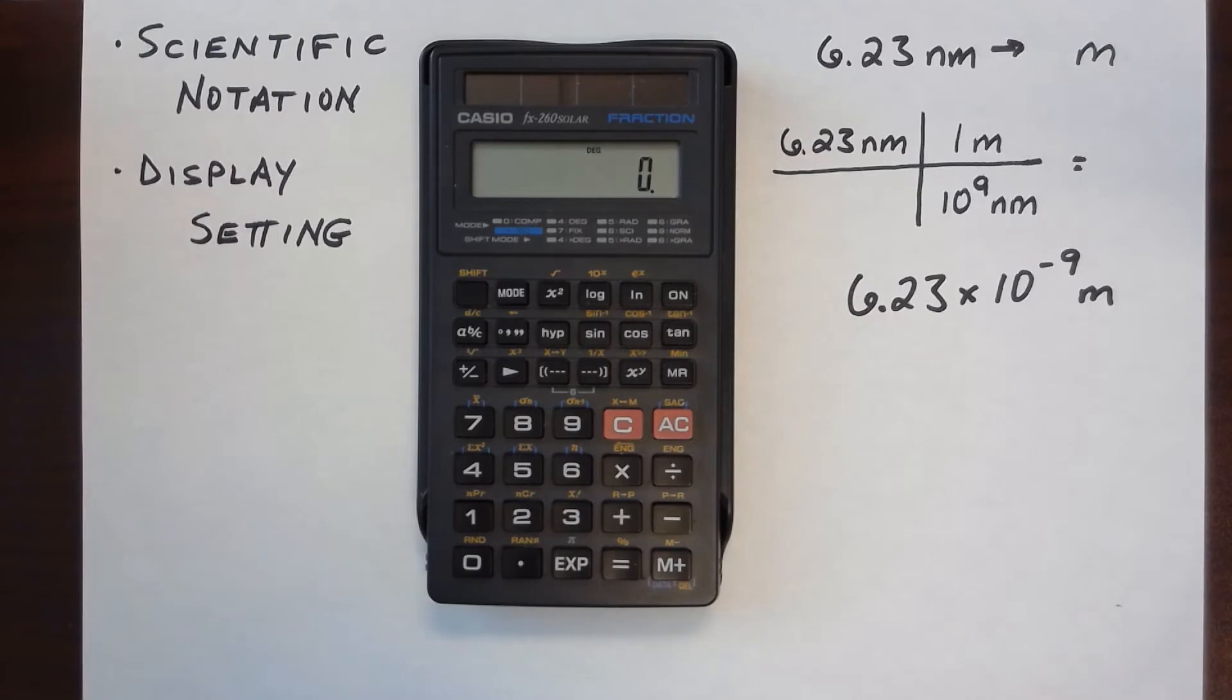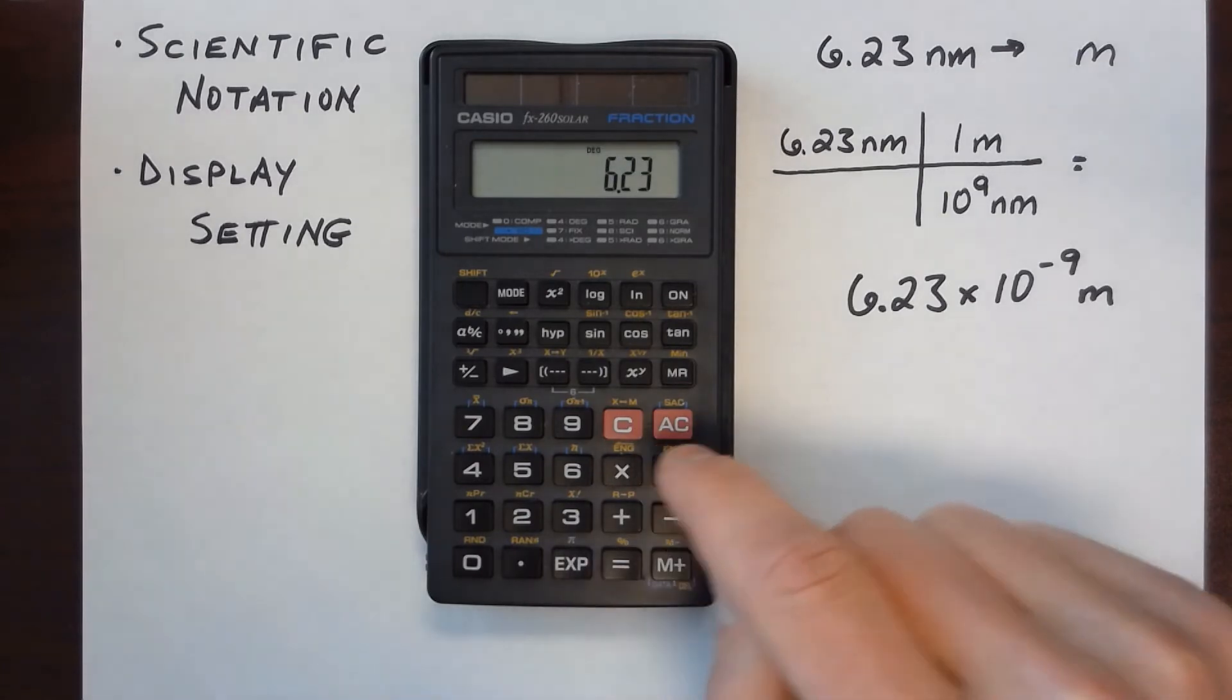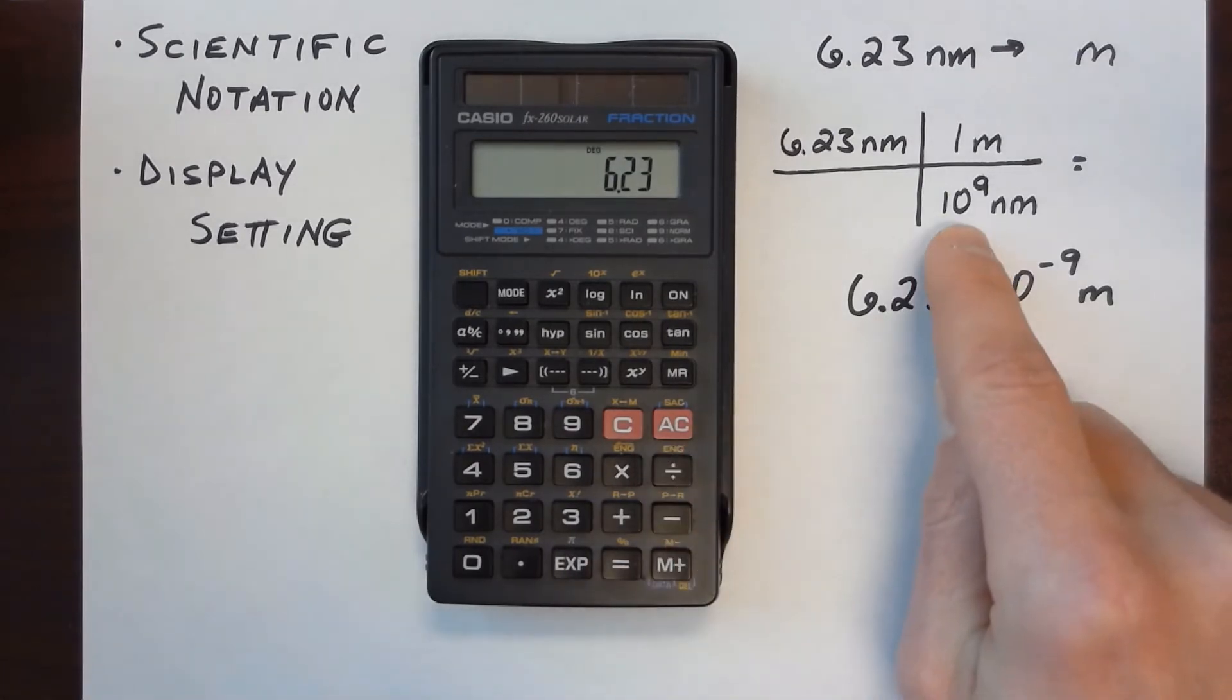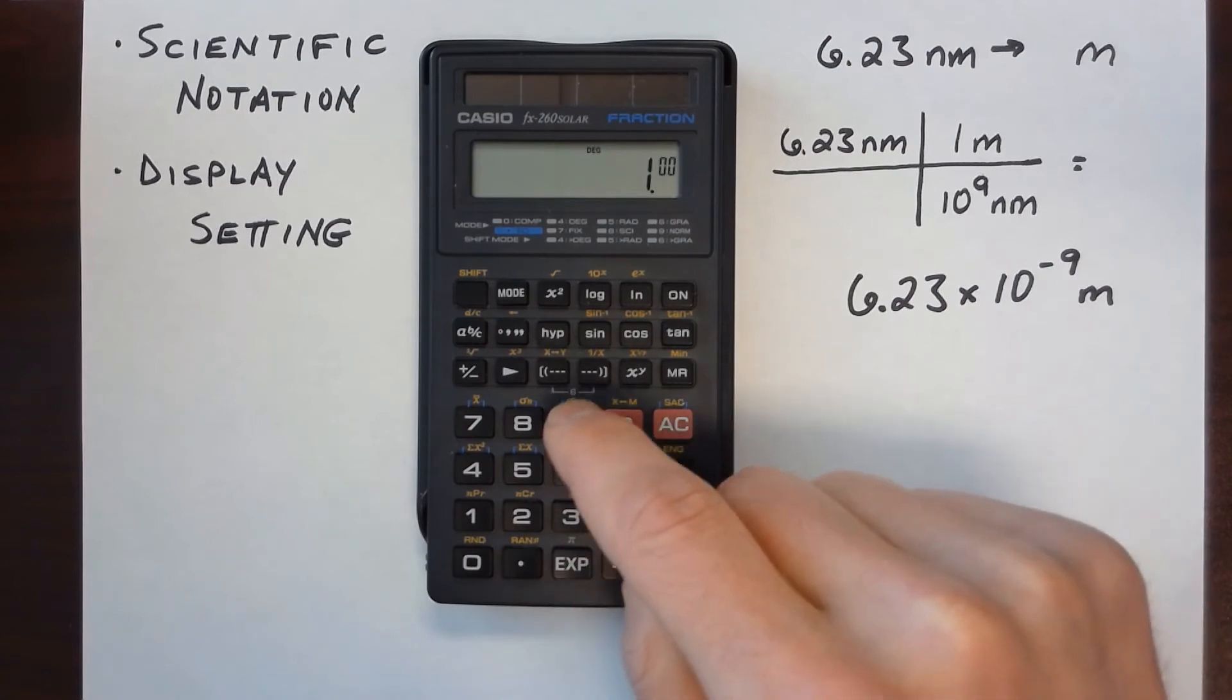So if I want to work this problem where I'm taking 6.23 nanometers and converting it to meters, I'm going to enter 6.23 divided by, and I can enter 10 to the 9 as 1 EXP 9.